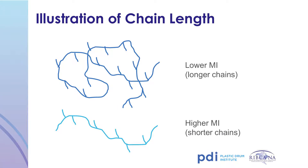Melt index also reflects the chain length of the polymer. Polyethylene can be thought of as a bucket of spaghetti noodles — tangled or knotted together. When you try to pull out the noodles with a fork, it's difficult due to entanglements of long chains, which equates to a lower melt index. If you cut the noodles with a knife, they become smaller components, and removing them is easier as they flow past each other, illustrating a higher melt index.